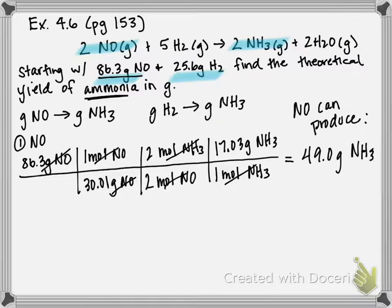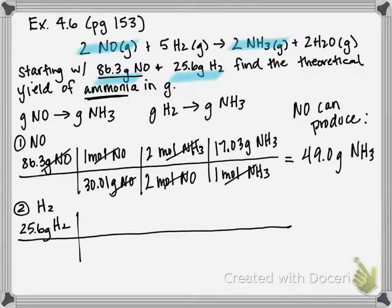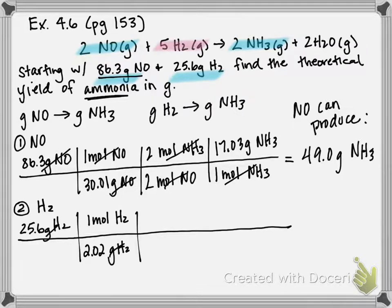Now I'll do the same thing, but starting with 25.6 grams of H2, to see how much NH3 that can produce. I'll get into moles by dividing by its molar mass: 2.02 grams of H2 per one mole of H2. Canceling grams, I then look at the balanced chemical equation and see there are 5 moles of H2 for every 2 moles of NH3.